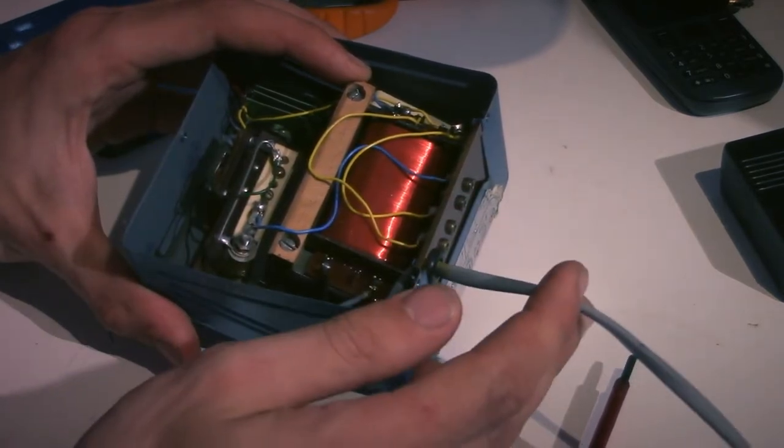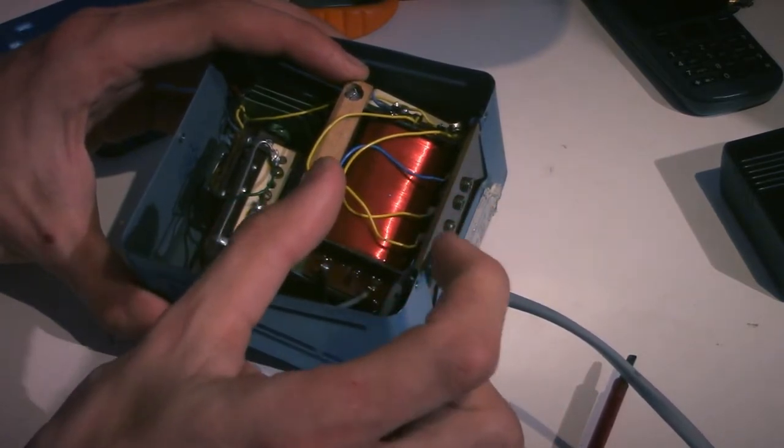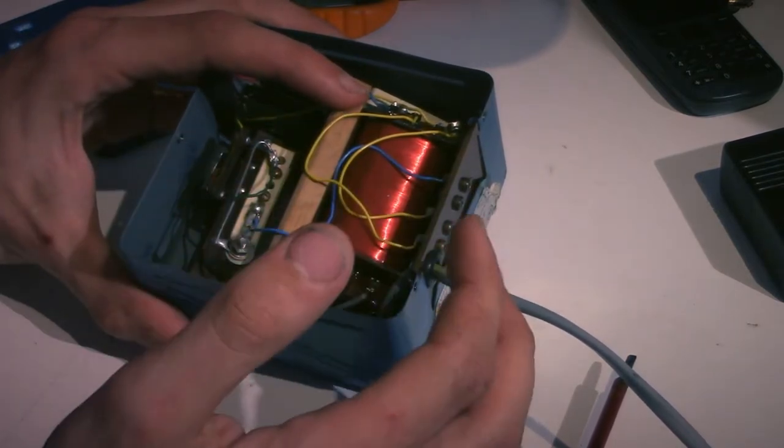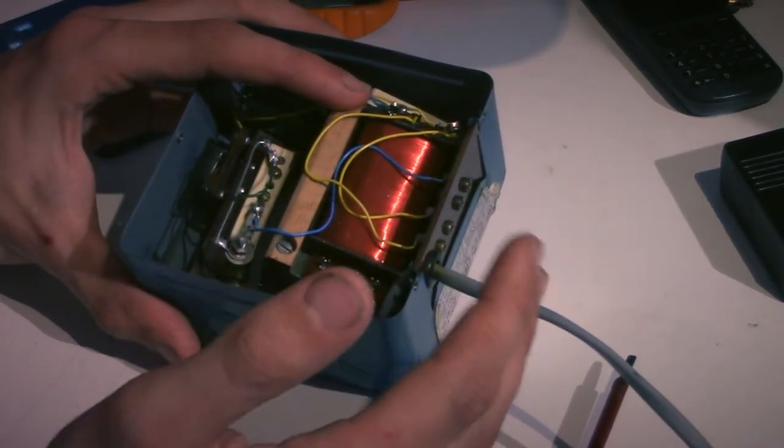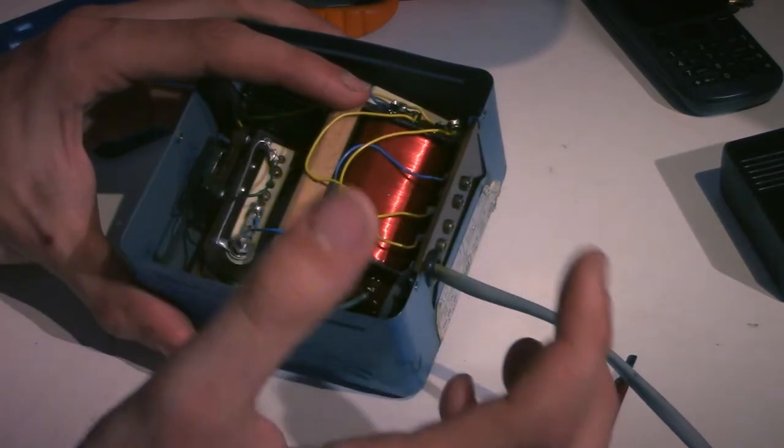So in America, where the mains frequency is actually 60 hertz, transformers are ever so slightly smaller. On airplanes, they often use a power frequency of 400 hertz, which allows them to make tiny transformers, which is of course very good because on an airplane, you're always trying to save weight.